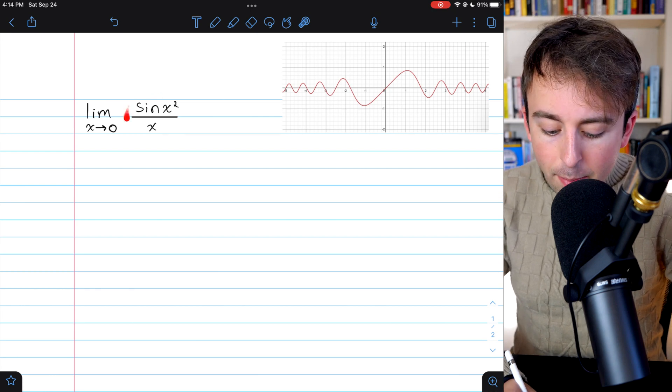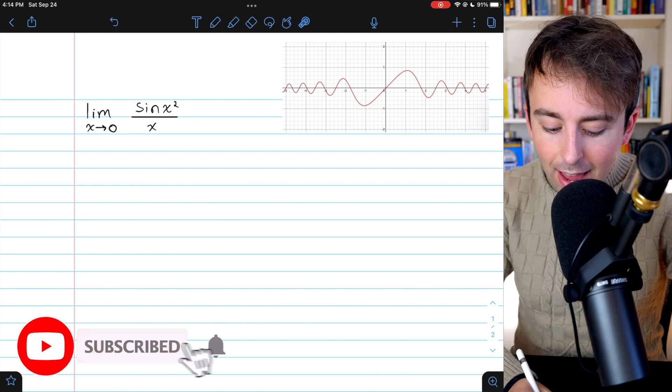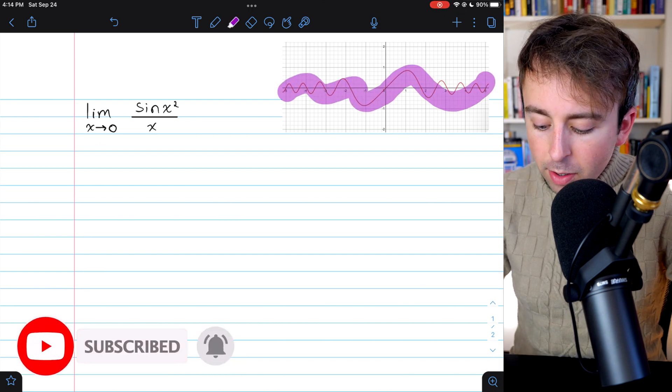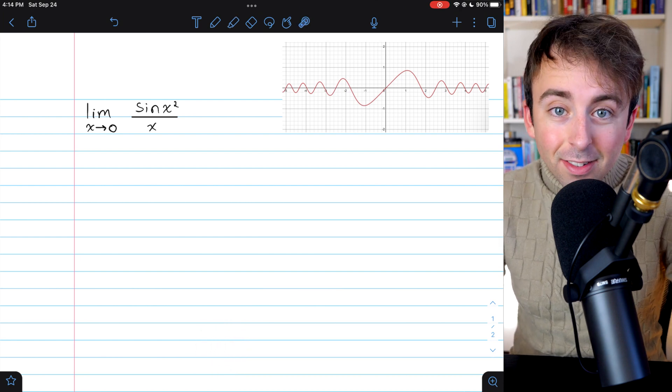We're going to evaluate the limit of sine of x squared divided by x as x approaches zero. Here is a graph of the function, and from the graph you can probably tell that the limit is zero.